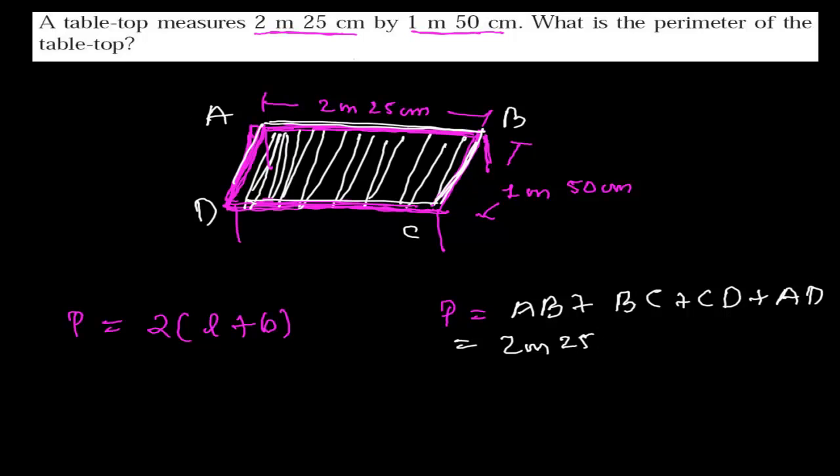And AB is 2 meter 25 centimeter, or I can directly write 2.25 meter also. And then BC is 1.5, I can write this as 1.5 meter also. And then CD is the same length as AB because in a rectangle opposite sides are equal. So AB and CD are equal, so it is again 2.25 meter.